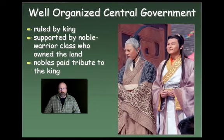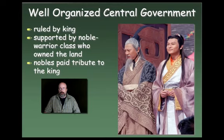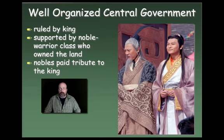They also had a well-organized central government. It was ruled by a king and supported by a noble warrior class who owned the land. The king would grant land to nobles or soldiers in exchange for their loyalty. These nobles paid tribute to the king — producing agricultural goods and collecting taxes from peasants — and in exchange the king allowed them to keep the land. This is very much like feudalism, and in many cases this is considered to be China's feudal period.